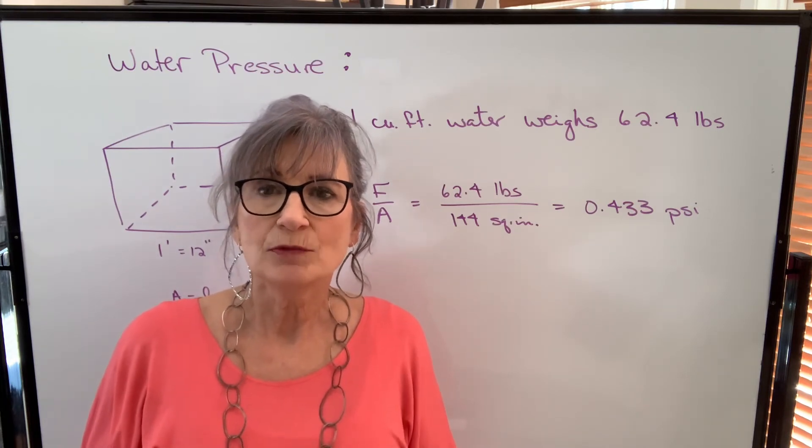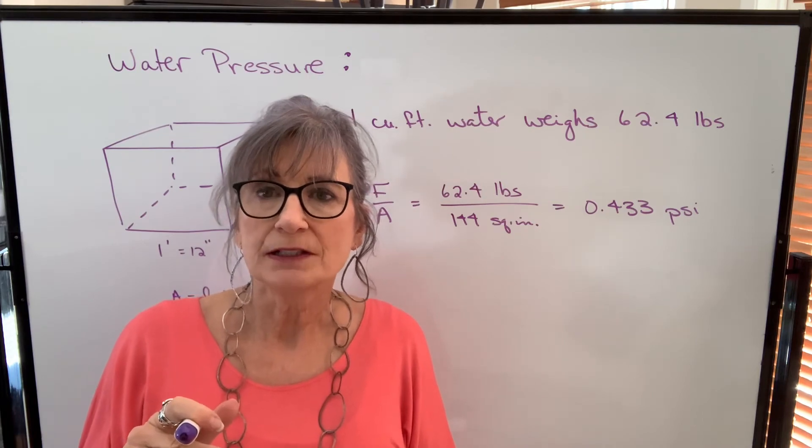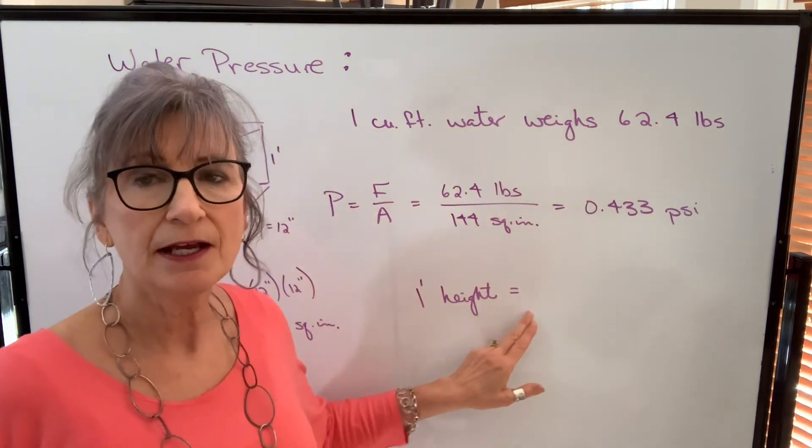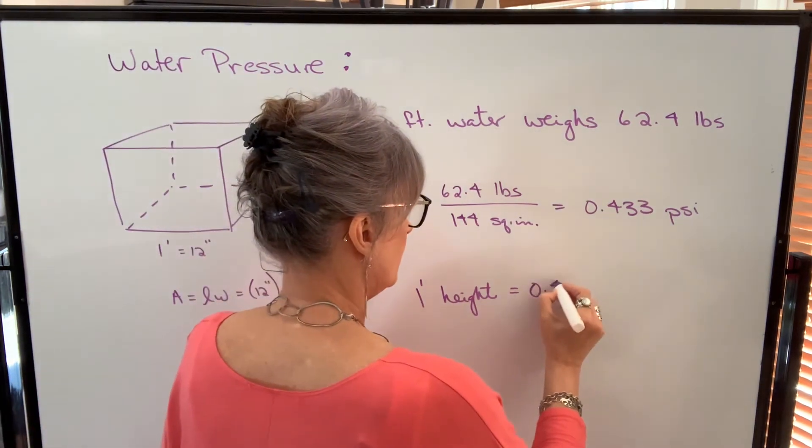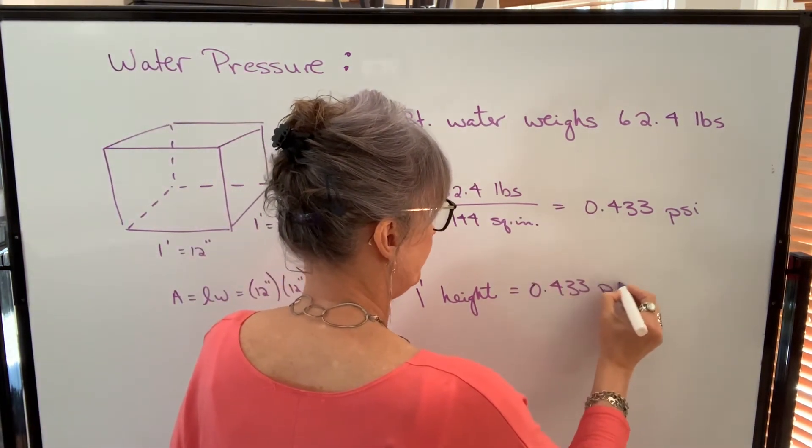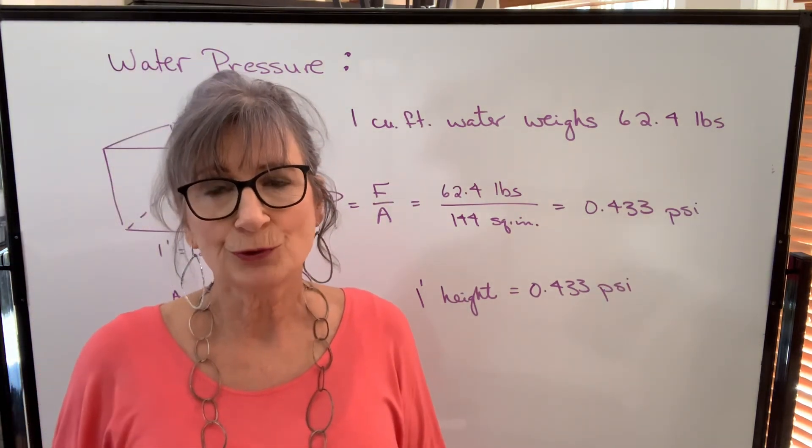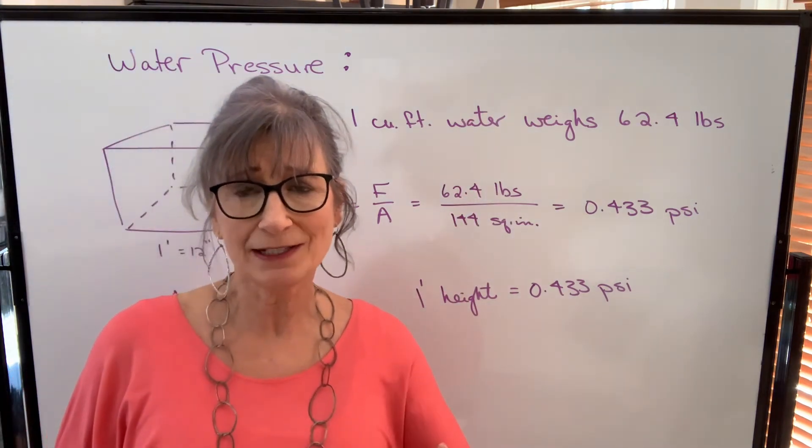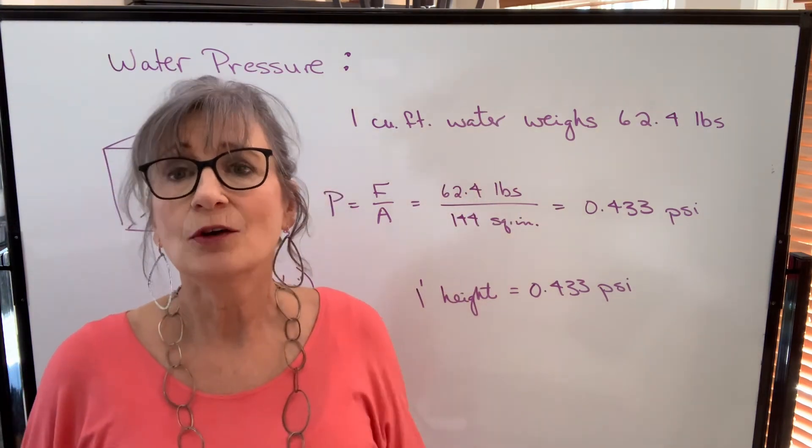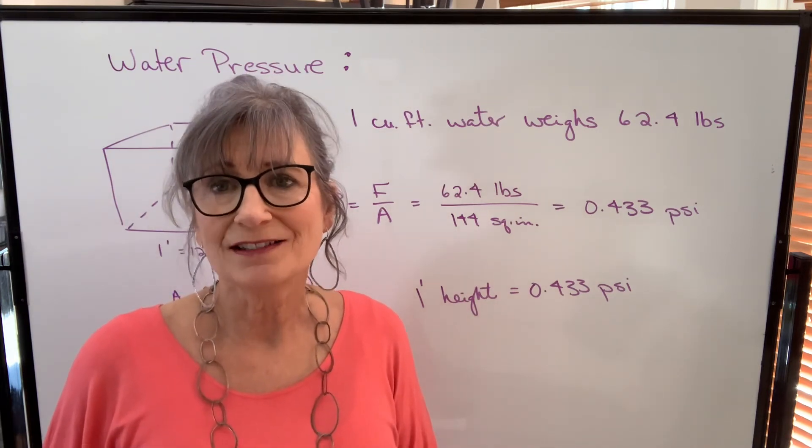So what we end up doing is using that height of one foot and understanding that that will create a pressure of 0.433 pounds per square inch. And that becomes very useful when we're doing calculations with fluid velocity. You don't always want to calculate the total volume, then the weight, then the area and divide. We can take this shortcut where all we need to work with if it's water is the height.